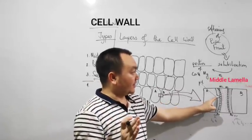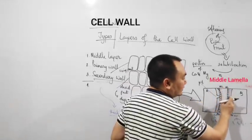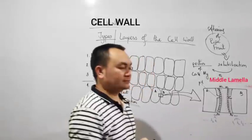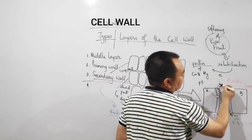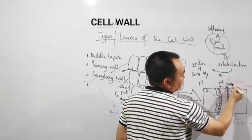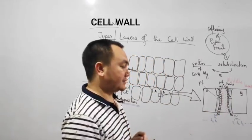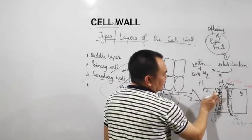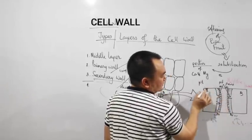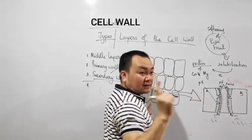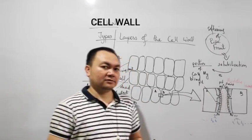Usually pit occurs in pairs. Like if here is a pit, there will be a corresponding pit in the neighboring cell. Like in B, there might be a corresponding pit as well. That makes two pits, which is called pit pairs. Do not forget, pit usually occurs in pairs. But there might be a single pit also. A pit, if it occurs singly, is said to be a blind pit.